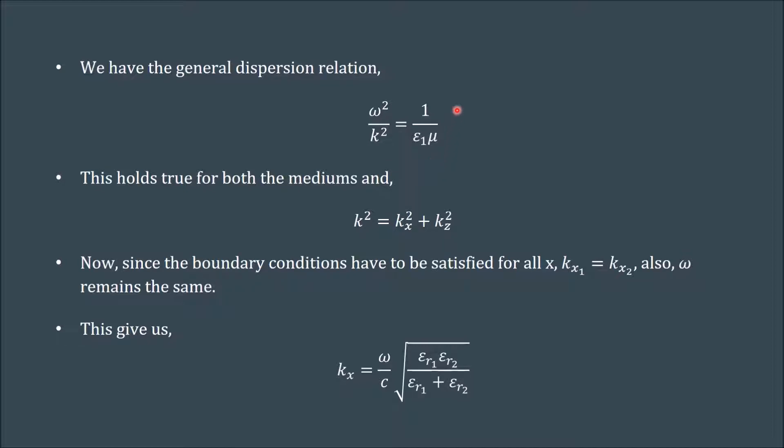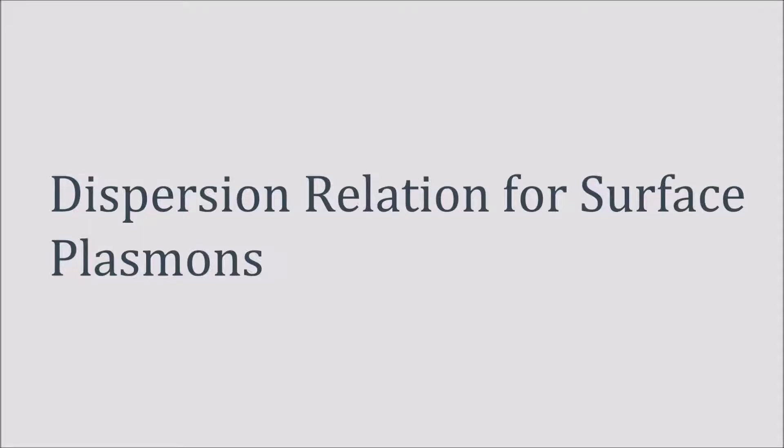Now coming to the general dispersion relation, we have ω²/k² = 1/εμ. This holds true for all electromagnetic waves. Now this k² equal to kx² plus kz² gives the relation between the net wave vector with respect to its directional wave vectors along x and z directions. Since the boundary conditions have to be satisfied for all points along the interface medium of the mediums, we have kx1 equal to kx2, and also since the frequency remains the same, it gives us this resulting equation.